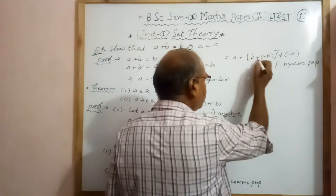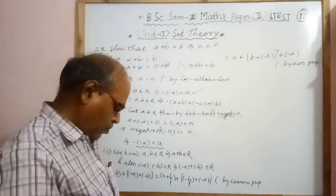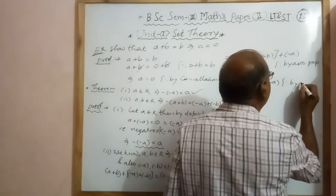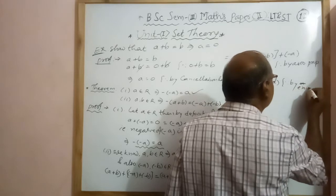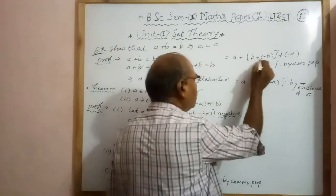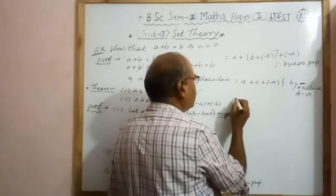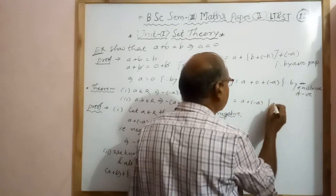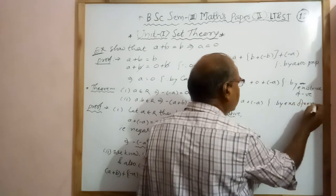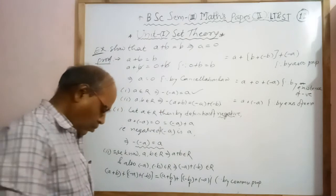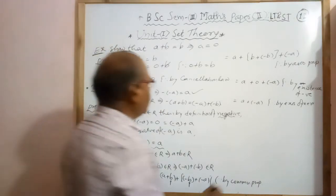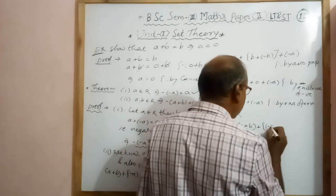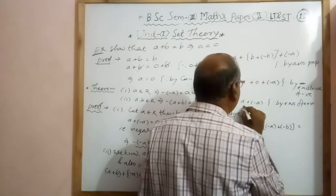Since adding 0 to any real number gives the same number, by existence of 0 we get A plus minus A. Again by the negative property, A plus minus A equals 0. Therefore the left-hand side A plus B, plus minus A plus minus B, equals 0, by existence of negative.